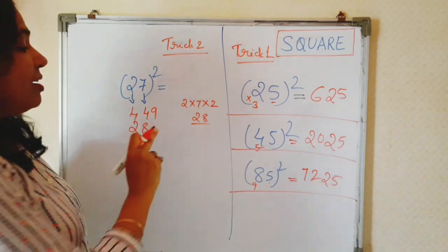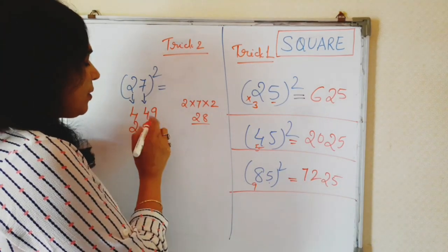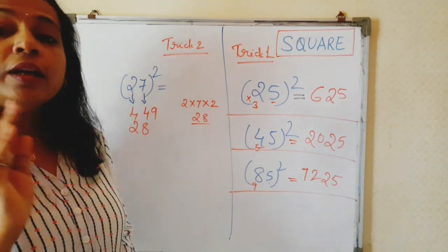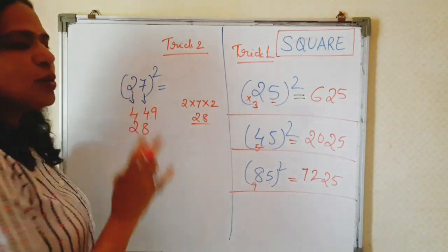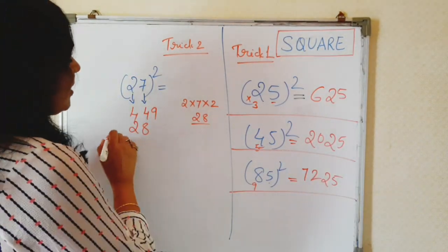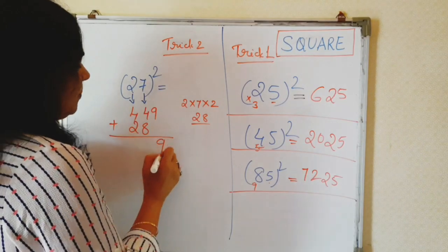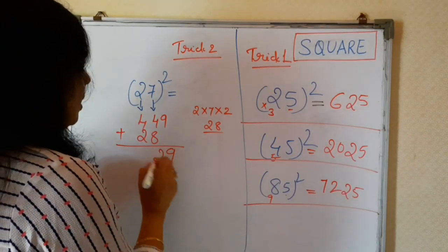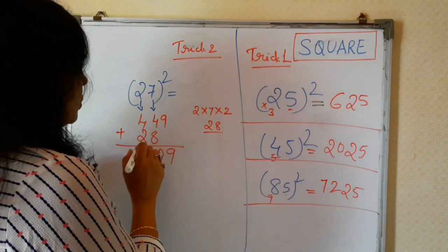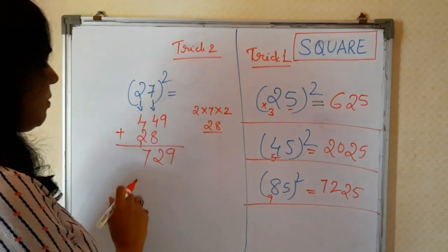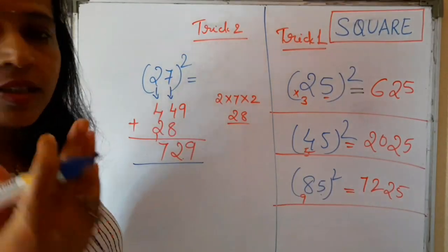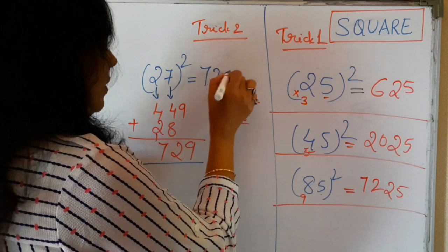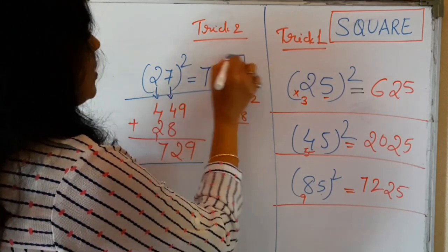That answer you write in this place. Note here, this I have left 1 unit place over here. Leave unit place and write the answer next to that. And add both the numbers. 9, 4 plus 8, 12 and 4 plus 2, 7, 1, 7. So, this 27 square is 729. This is our answer.